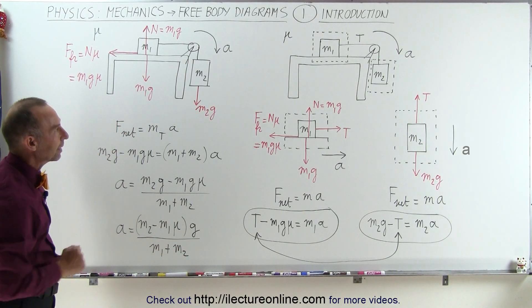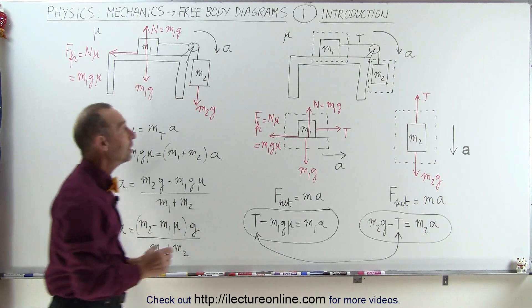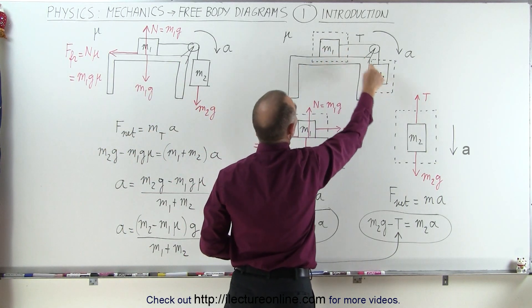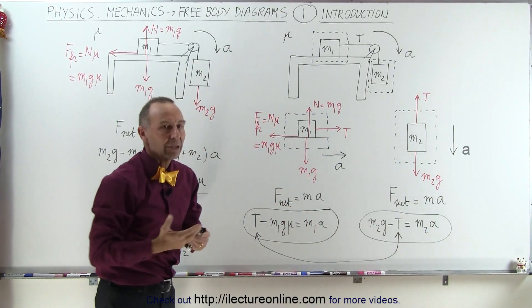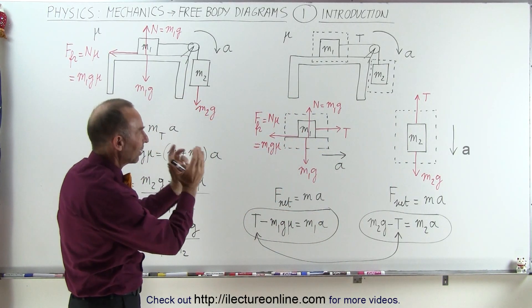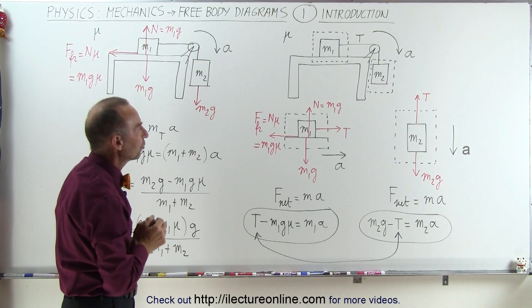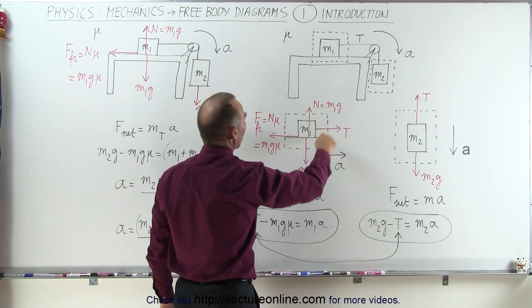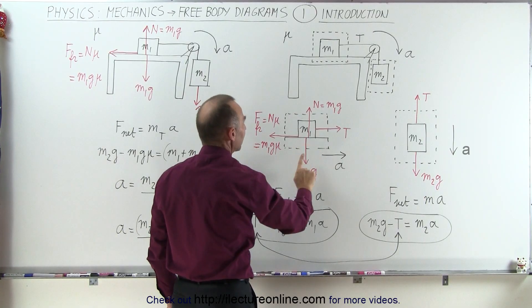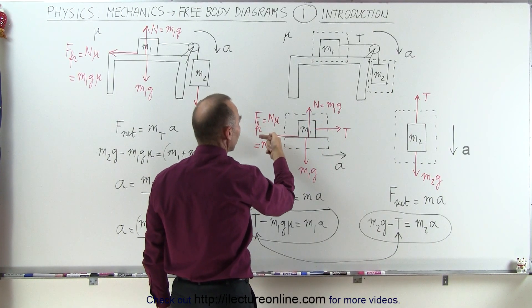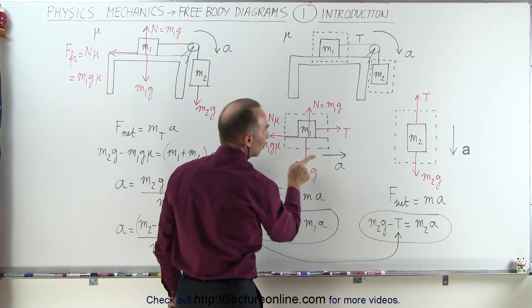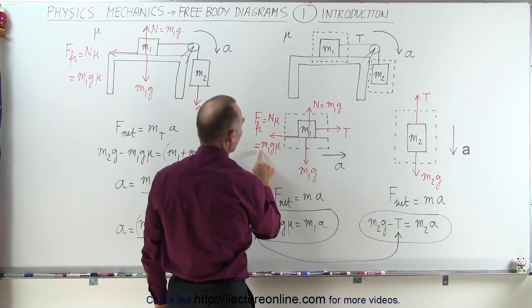If we use free body diagrams what we need to do then is look at each object separately in a separate window so to speak. So a free body diagram is just a picture of a single portion of the whole system. We look at all the forces acting on m1. Again we have the gravity acting down, the normal force pushing back, the friction force pushing to the left. Again we're assuming acceleration will be to the right.